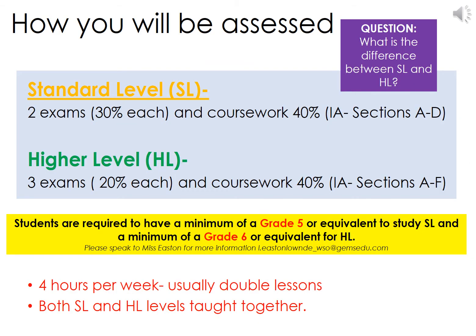You can either opt for the standard level or the higher level versions of this course. At standard level, you will do 2 examinations and a coursework known as the internal assessment, which is worth 40% of your overall grade. If you opt for higher level, you will have 3 examinations and the IA as well, but you will have more sections of the IA to complete in comparison to the standard level.